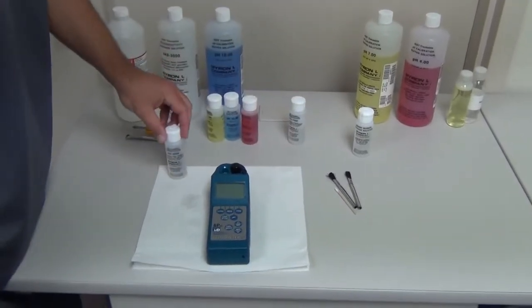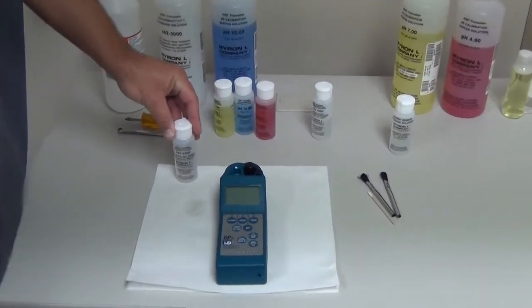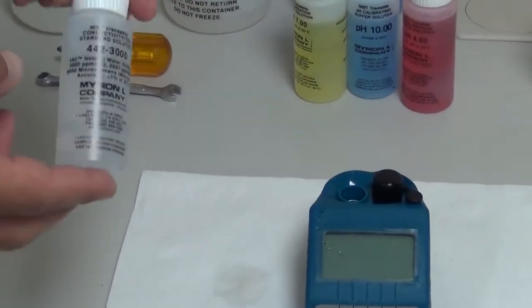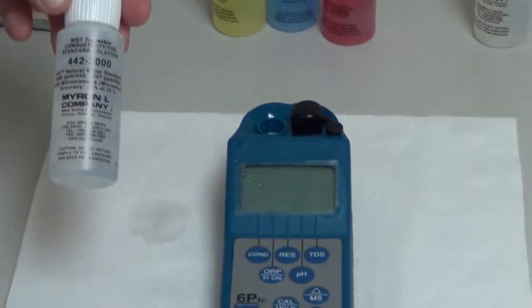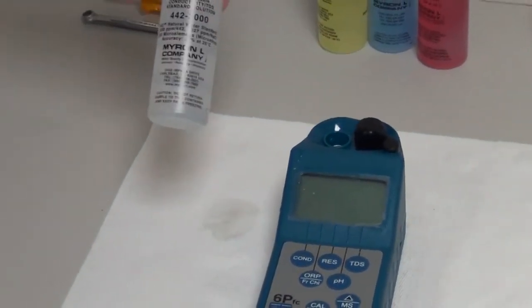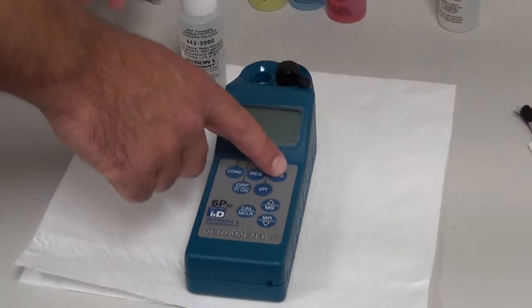All right, we will now move on to calibrating the TDS function. TDS uses a 442 solution. The factory recommended solution is 442 3000, so I should get a reading of 3000 ppm. That is what I'll use. The method for calibrating is the same as it was with the conductivity.